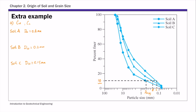For d30 values, you start from the y-axis. d30 is the particle size corresponding to 30% finer. From the 30% mark, draw a horizontal line and get the corresponding d30 values for three soils. For soil A, d30 is about 5 mm. For soil B, d30 is about 2.1 mm. And for soil C, d30 is about 1 mm.